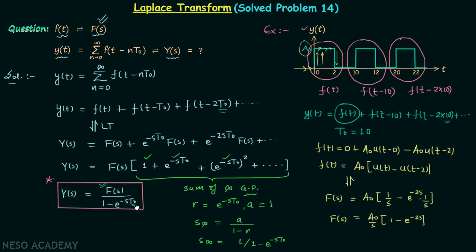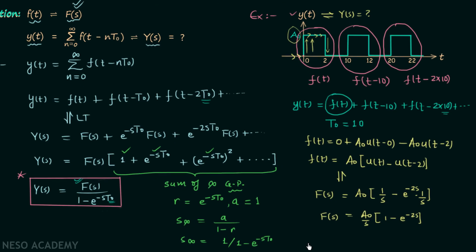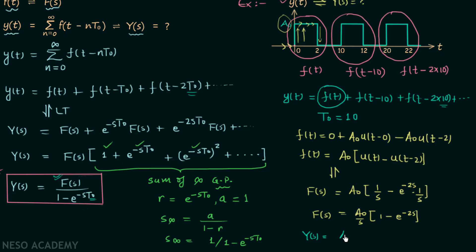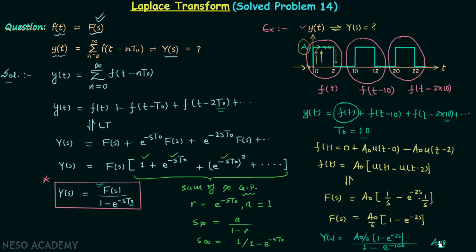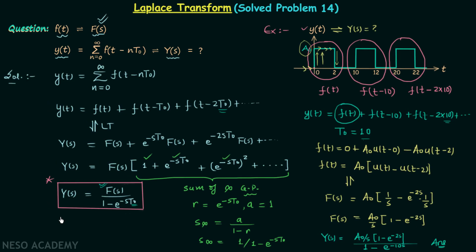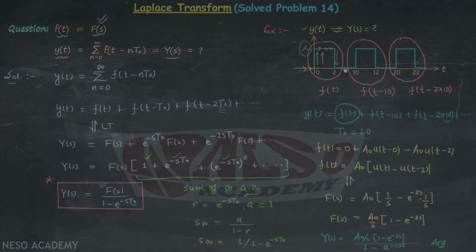We now have F(s) and t₀, so we can calculate Y(s), which was our task. Finally, Y(s) equals (a₀/s)·(1 minus e^(−2s)) divided by (1 minus e^(−10s)), where t₀ equals 10. This is our answer. I hope you now have a clear understanding of this process. If you have any doubt you may ask in the comment section, but don't forget this standard result because we can use it to solve questions like this.